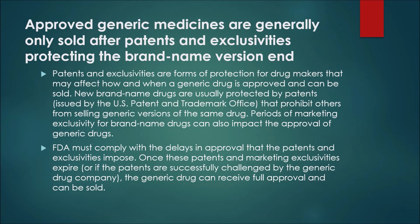The label is the same as the brand name medicine's label. Approved generic medicines are generally only sold after patents and exclusivities protecting the brand name version end. Patents and exclusivities are forms of protection for drug makers that may affect how and when a generic drug is approved and can be sold. New brand name drugs are usually protected by patents issued by the U.S. Patent and Trademark Office that prohibit others from selling generic versions. Once these patents and marketing exclusivities expire, or if the patents are successfully challenged by the generic drug company, the generic drug can receive full approval and can be sold.